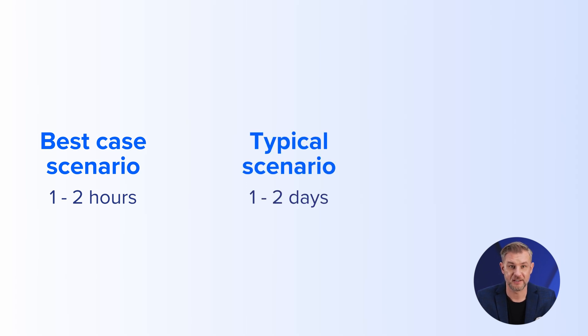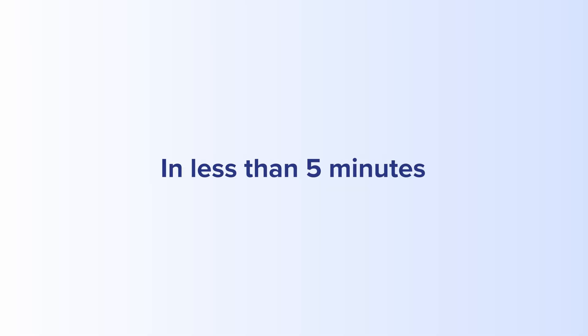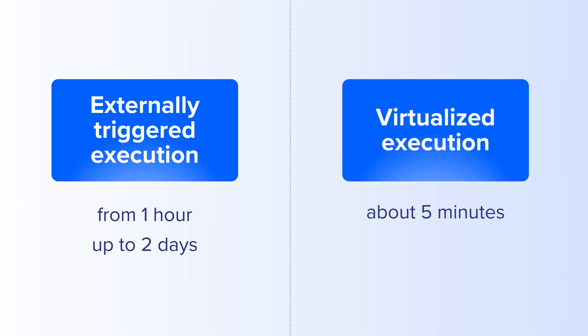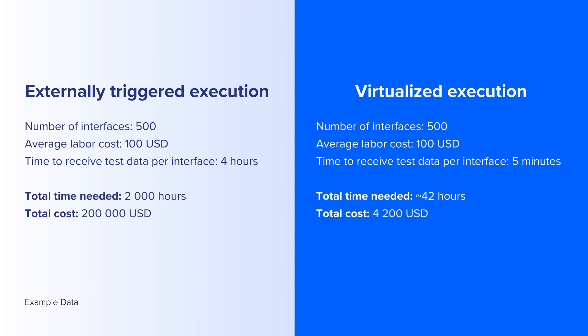In the absolute best-case scenario, this can take up to one or two hours. In a slightly worse situation, it may take a day or two. In the worst-case scenario, this may not even be possible as the third-party system may simply not be there, at least from the standpoint of the development environment. On the contrary, with service virtualization in place and an abundance of historical data at hand, every member of our team can trigger test data on demand in less than five minutes, as there is no one you have to rely on — whenever it's needed, wherever it's needed. By comparing the average time of externally triggered execution to virtualized execution, we can evaluate the time saved. Applying those calculations to the determined number of interfaces per release and per year, plus average labor costs, provides the estimation of financial gain in the build phase.